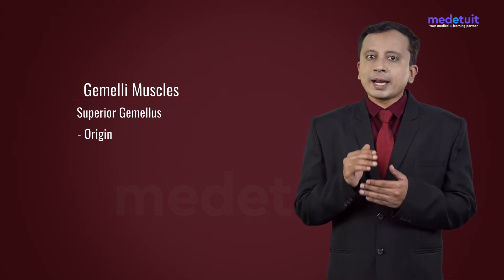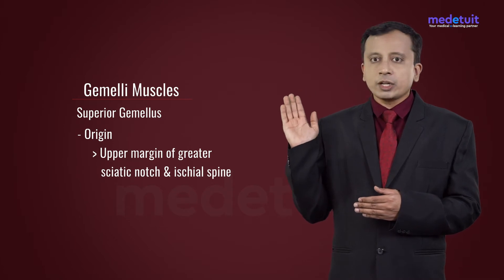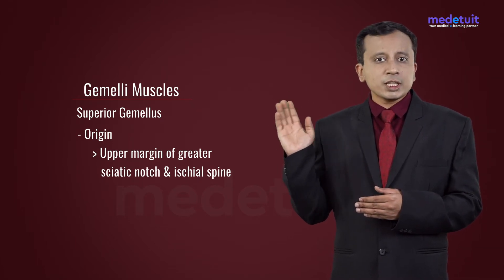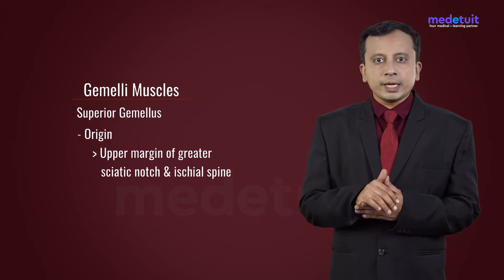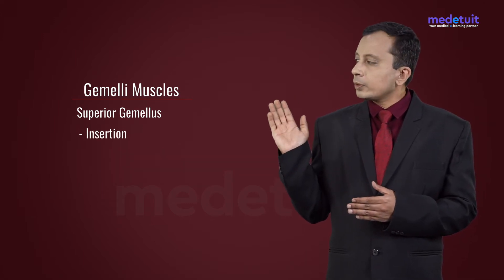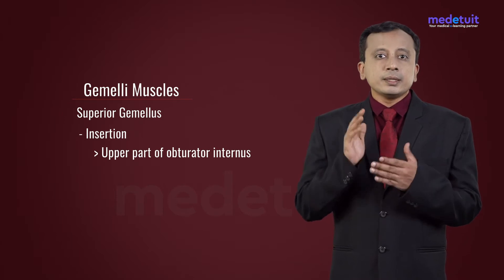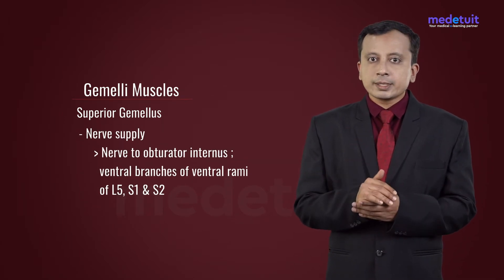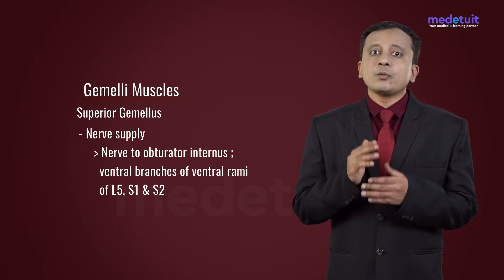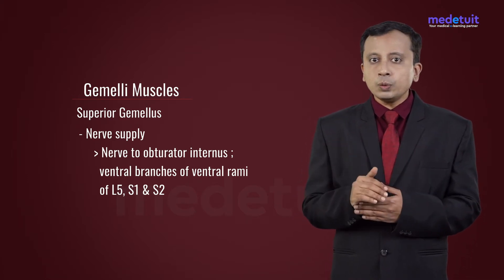The superior gemellus takes its origin from the upper margin of the greater sciatic notch and also from the ischial spine. It goes along with the obturator internus tendon and gets inserted into the upper part of the obturator internus. This muscle is supplied by the nerve to obturator internus, that is the ventral branches of ventral rami of L5, S1, and S2.